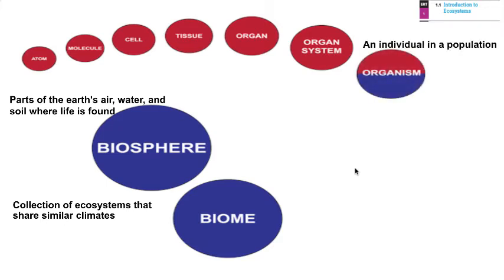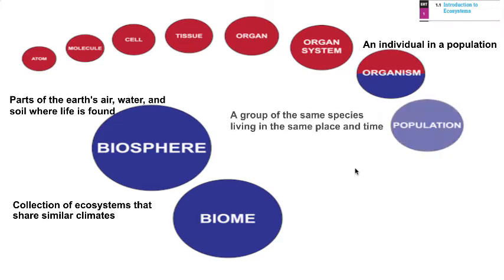Biosphere and biome are the larger units of our living world. We're going down to the organism level — organisms are individuals in a population, just individual things that we could study in an ecosystem. Moving up larger in scale, a population, which we'll be discussing in our next unit on human populations, is a group of the same species living in the same place at the same time.